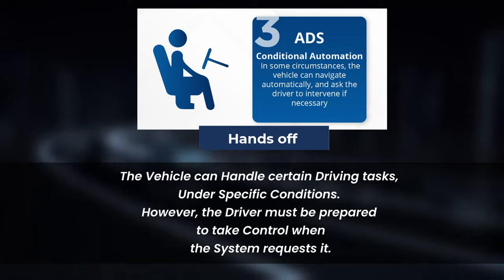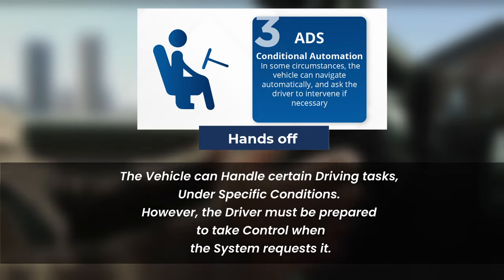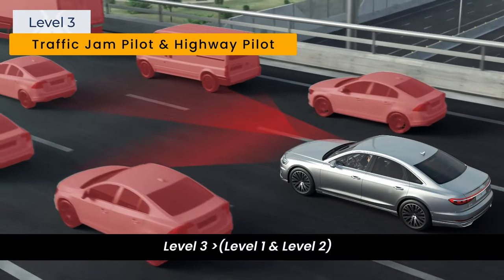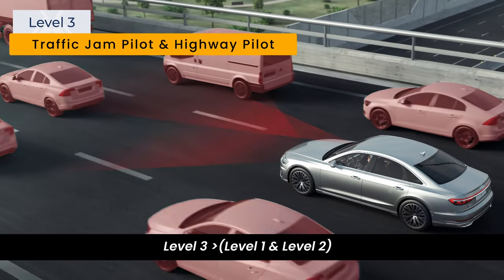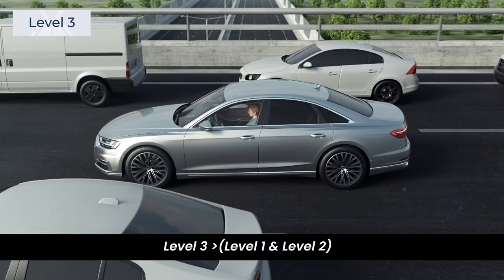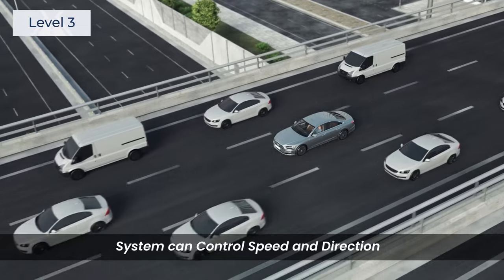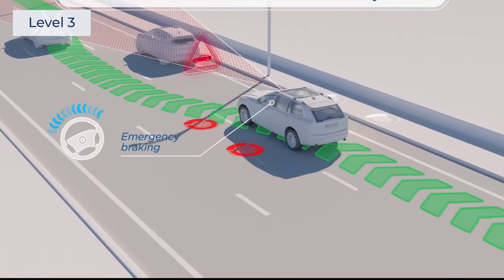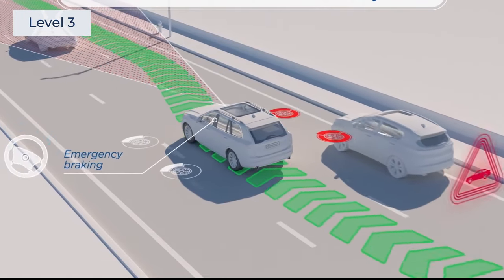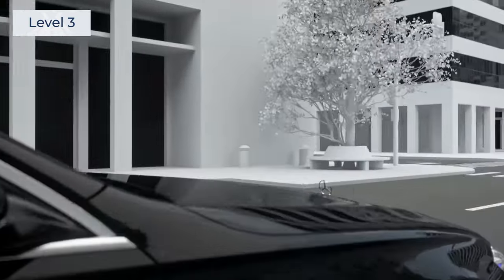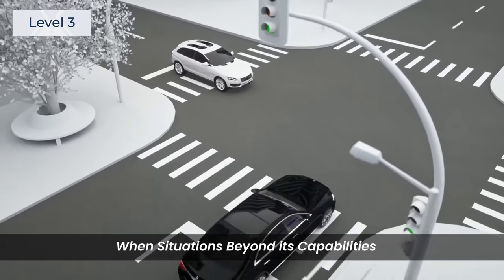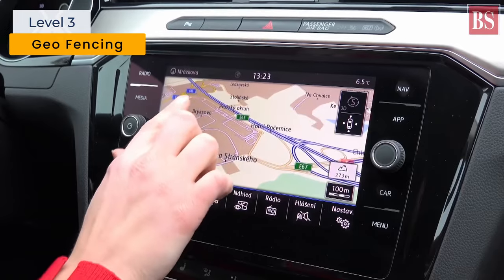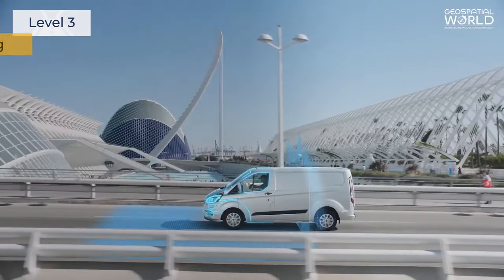Level 3 — Conditional Automation. The vehicle can handle certain driving tasks under specific conditions; however, the driver must be prepared to take control when the system requests it. Level 3 features include Traffic Jam Pilot and Highway Pilot, offering a higher level of autonomous driving. The vehicle can navigate through stop-and-go traffic without constant driver intervention, and the system can autonomously control the vehicle's speed and direction on highways, perform automated lane changes, and keep the vehicle centered. If the system encounters situations beyond its capabilities, it alerts the driver to take over within a specific time frame. It also uses geofencing or high-definition maps to define operational boundaries and ensure the vehicle operates only within pre-mapped, well-known areas.